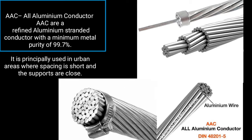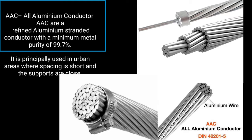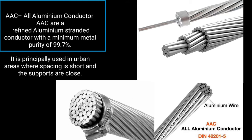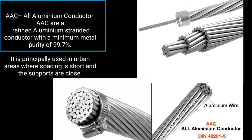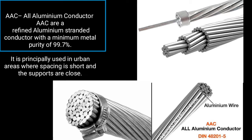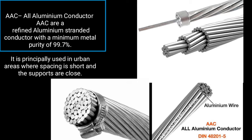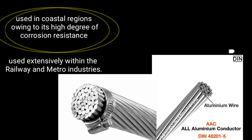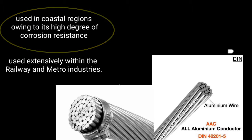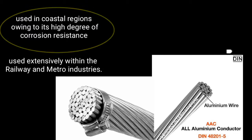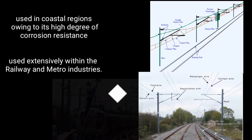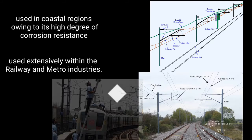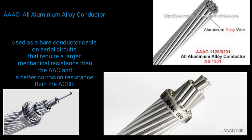AAC is a stranded conductor with a minimum aluminium purity of 99.7%. It is principally used in urban areas where spacing is short and the supports are close. It can be used in coastal regions owing to its high degree of corrosion resistance, and is also used extensively within the railway and metro industries.